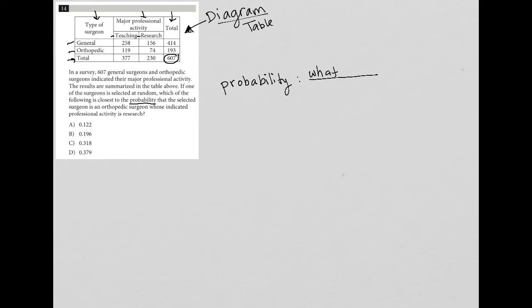And the number on top is going to be what I want, right? Which really just means what you're told you're looking for. And on the bottom, the number will be the total, right? The total that you are choosing from.